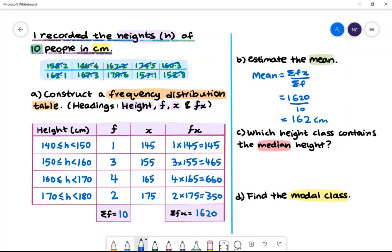Part C: Which height class contains the median height? The middle person will be between person number 5 and person number 6. The median height class is between 160 and 170.